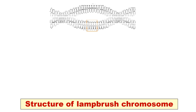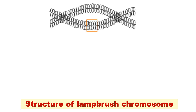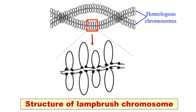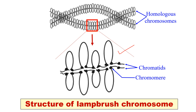The lampbrush chromosome has two homologous chromosomes. If you see a part of a single chromosome under high magnification, you will see that one chromosome has two chromatids. There is a main axis and another structure called chromomeres, which are held together by axial fibers. The chromatids are folded into loops.